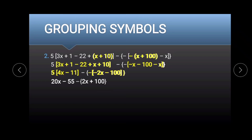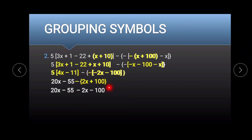After eliminating the brackets, lastly we have the braces. We eliminate them by distributing the negative sign to 2x plus 100. Copy 20x minus 55, then negative times 2x gives negative 2x, and negative times positive 100 gives negative 100. Now combining like terms: 20x minus 2x gives 18x, and negative 55 minus 100 gives negative 155.